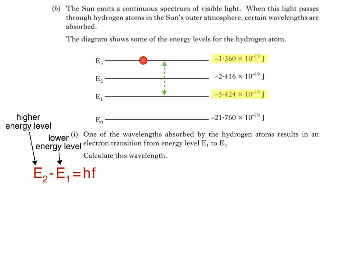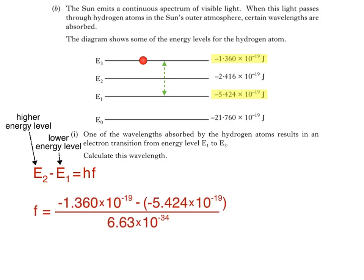Substituting the values from the diagram, we get negative 1.360 times 10 to the negative 19, minus negative 5.424 times 10 to the negative 19, equals 6.63 times 10 to the negative 34 times F. We can make F the subject by dividing both sides by Planck's constant. This gives us a frequency of 6.13 times 10 to the 14 hertz.